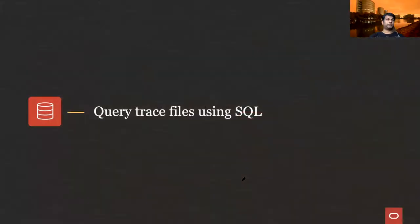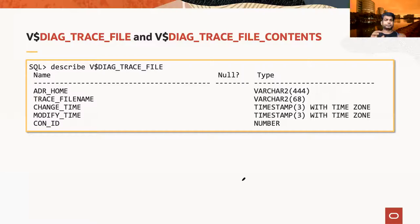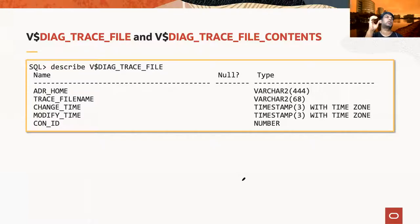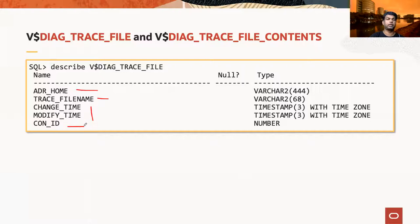How do you query trace files using SQL? There are two views: v$diag_trace_file and v$diag_trace_file_contents. These provide information like the ADR home, trace file name, modification time, and the container ID from which it comes. People who don't have OS access can still query these views. You can run 'select trace_file_name from v$diag_trace_file' to see all trace files on your system.